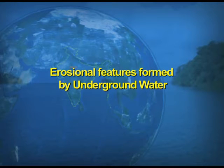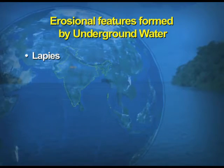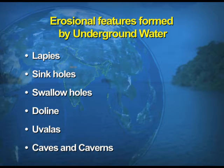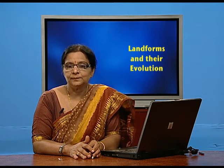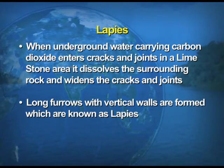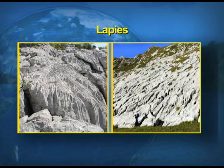Erosional features formed by underground water include lappies, sinkholes, swallow holes, dolines, uvalas, and caves. When underground water carrying carbon dioxide enters the cracks and joints in a limestone area, it dissolves the surrounding rock and widens the cracks and joints by its solution activity. The long furrows with vertical walls formed by this process are known as lappies — deep furrows formed by underground water.